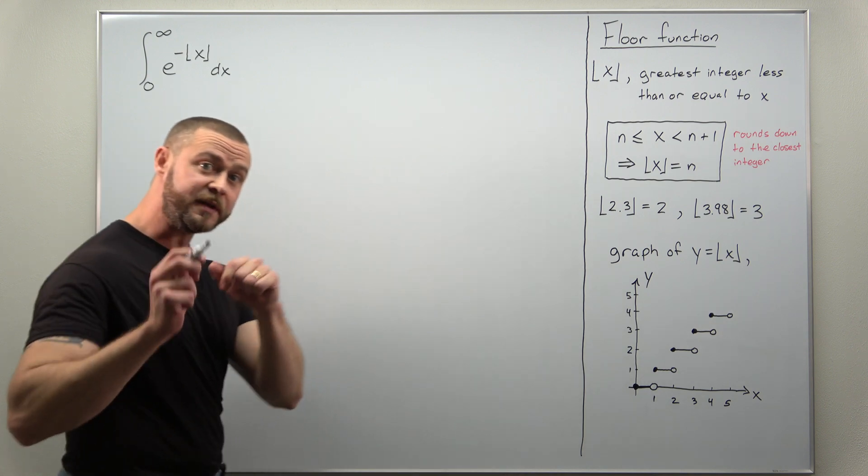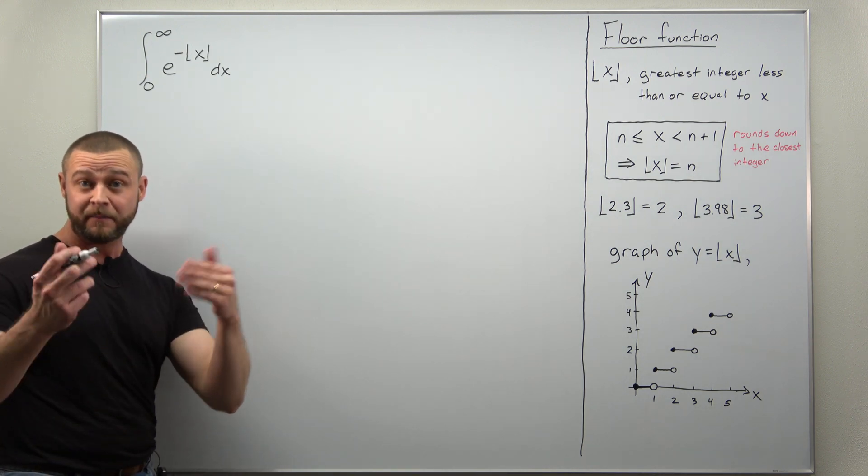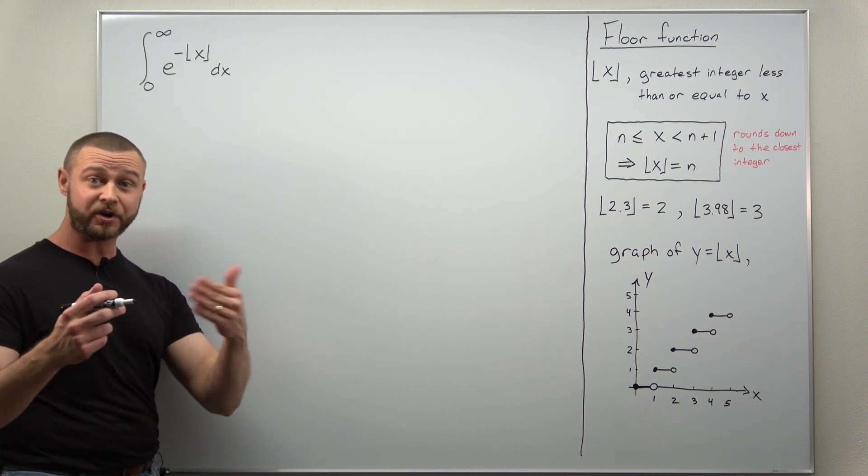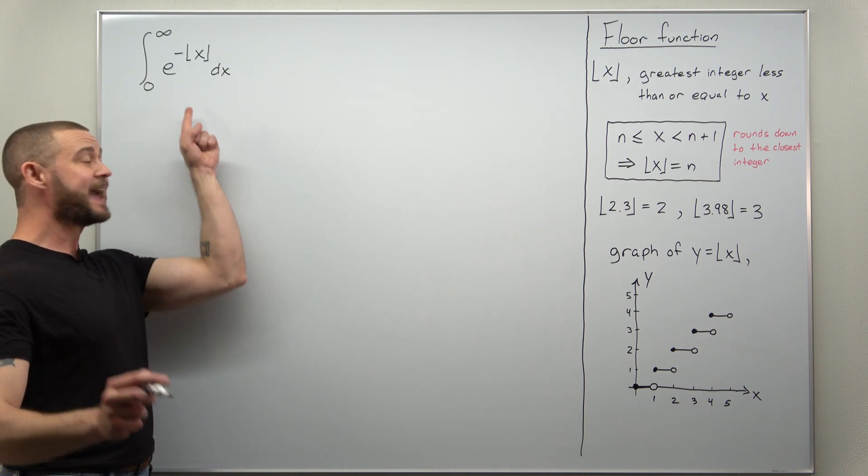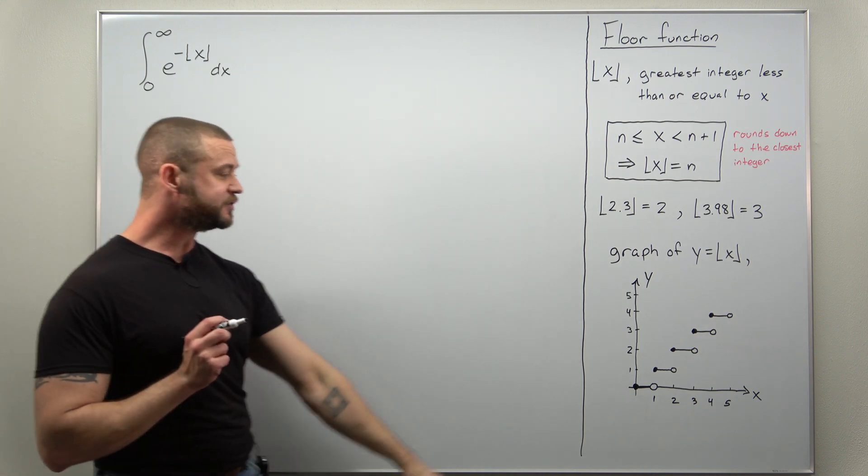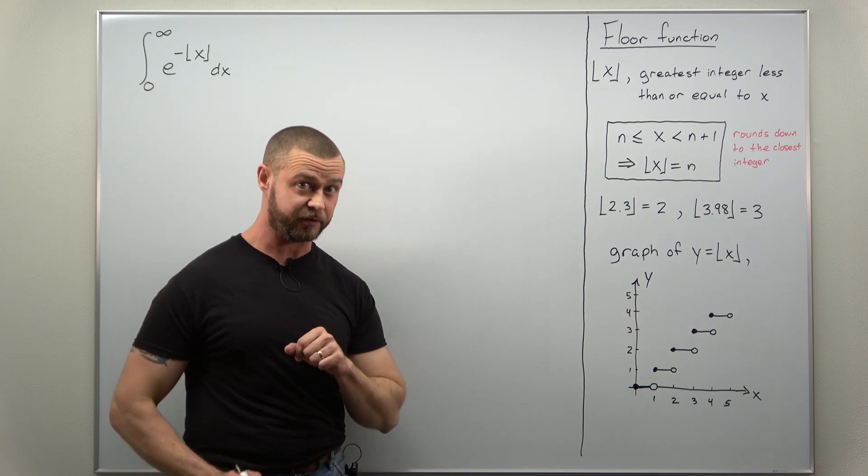Now our integral here will be difficult to evaluate by first finding an antiderivative because you probably don't know an antiderivative in terms of the floor function. Instead what we're going to do is take our integral and make use of this fact that the floor function is constant on integer intervals.